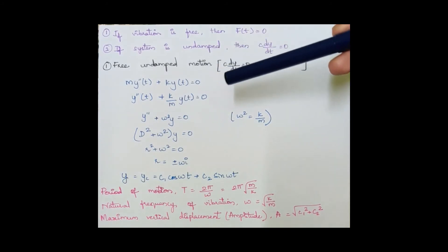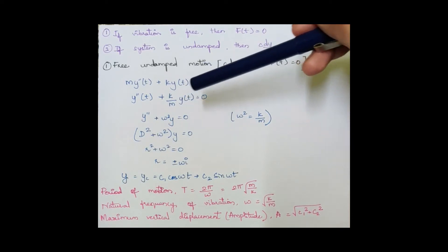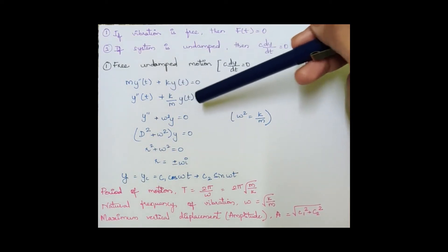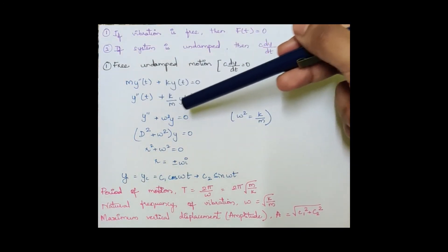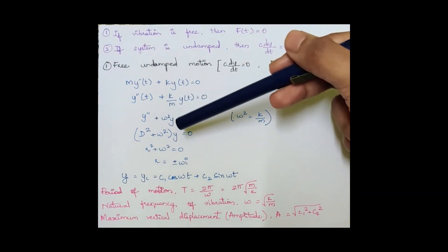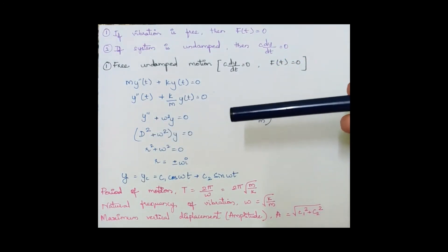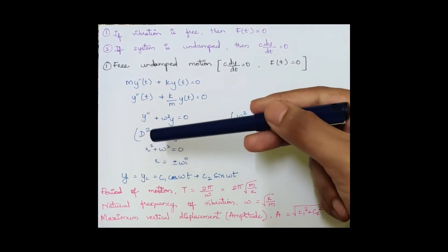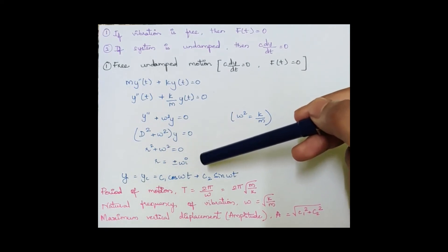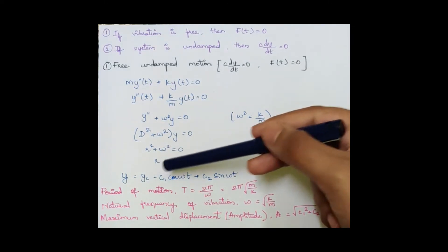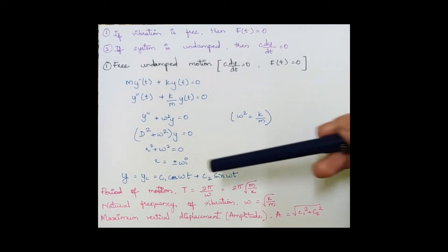Dividing by m, we obtain y″(t) + (k/m)·y(t) = 0. Since k/m = ω², this becomes y″ + ω²y = 0. Converting to the auxiliary equation (using r instead of m to avoid confusion with mass): r² + ω² = 0, giving r = ±ωi. These are imaginary roots, so the complementary function is y = c₁·cos(ωt) + c₂·sin(ωt).